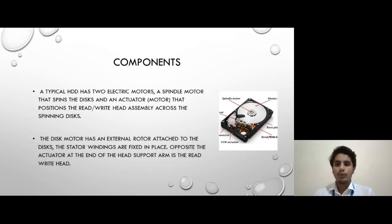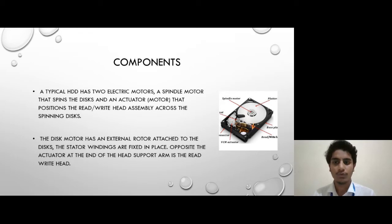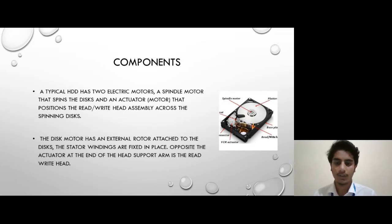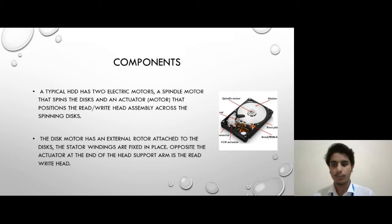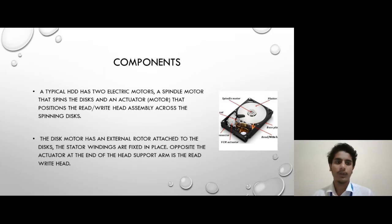Next are the components of a hard disk. A typical hard disk contains two motors: a spindle motor that spins the disk, and an actuator that positions the read-write head assembly across the spinning disk. The disk motor has an external rotor attached to the disk and the stator windings are fixed in place. Opposite the actuator, at the end of the head support arm, is the read-write head.